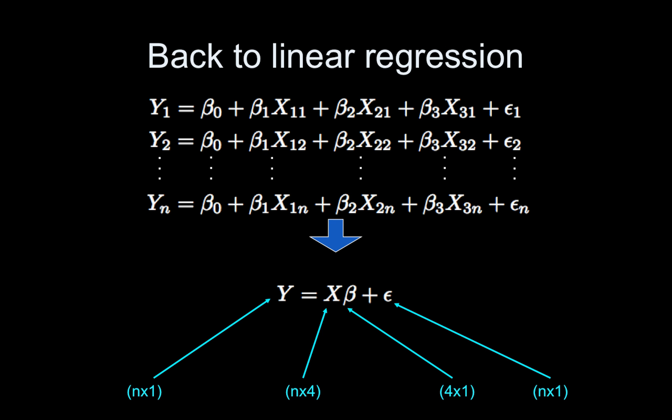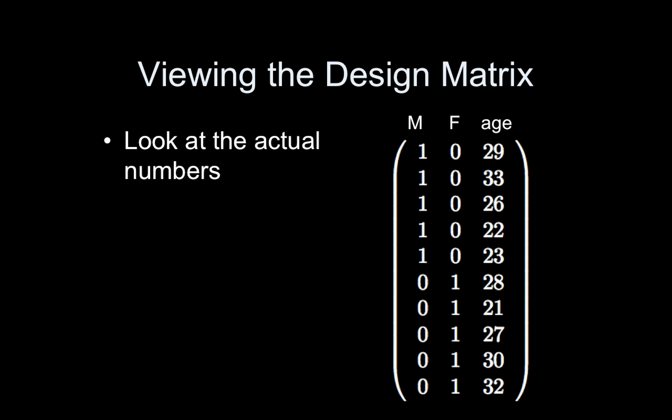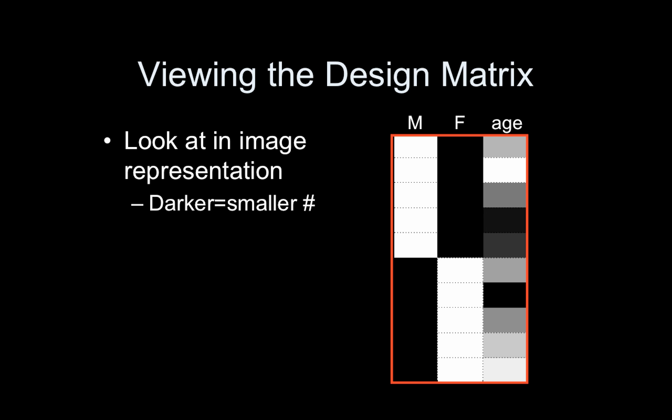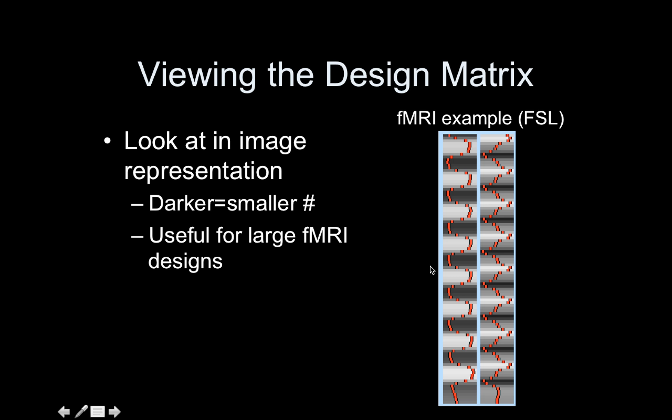These design matrices — there are different ways to view them. One way is to look at the actual numbers. With imaging data, especially when doing time series analysis, you often have to look at an image representation where darker equals a smaller number. So this is the same thing just using an image representation — great for looking at your fMRI time series model. Here's an example from FSL; SPM does something similar for a block design. This is the regressor for the stimulus and this is just the derivative of it — I'll talk more about that later. This is more helpful than trying to look at the numbers.